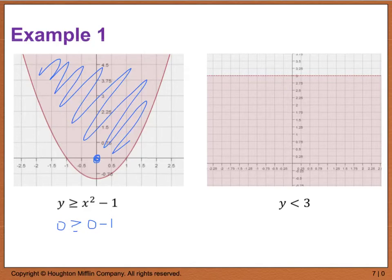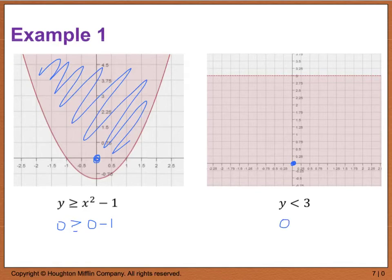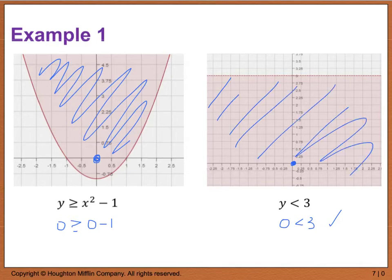One thing to reiterate: when we graph equations like y is less than 3, those are just horizontal lines. Likewise, x is greater than 3 gives vertical lines. The graph of y equals 3 is a horizontal line through 3. Because of the less than symbol, I make this a dashed line. Using test point (0, 0): is 0 really less than 3? Because it is, I shade below that line.